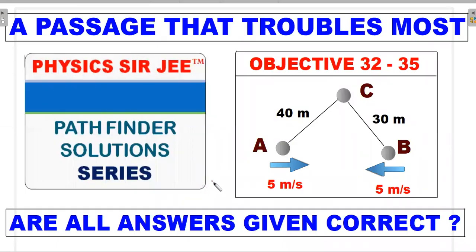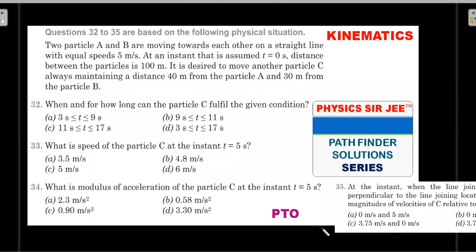Welcome back to the channel Physics Sarji. Here we are in the Pathfinder Solution Series, from the first chapter of kinematics. I have brought forward a passage from the objective section — objectives 32 to 35 — the four questions which trouble most students. I've been getting a lot of requests for clarity on the concepts of this particular problem, and some students found one or two answers given in the book are wrong. Let's see whether that claim is correct, and analyze the solution in the shortest and smartest possible manner.